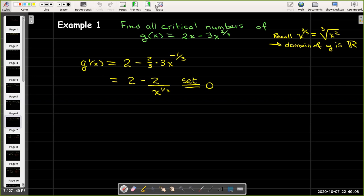And I'd like to set that equal to zero. But before I solve this equation, I want to make note of the fact that now I have an x in the denominator. So g prime is not defined when x equals zero. So without doing any solving, I can say that x equals zero is a critical number of g.